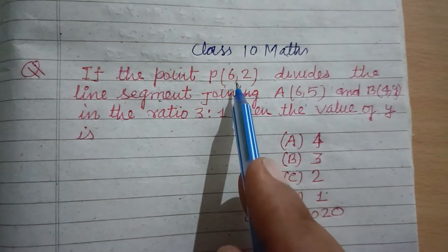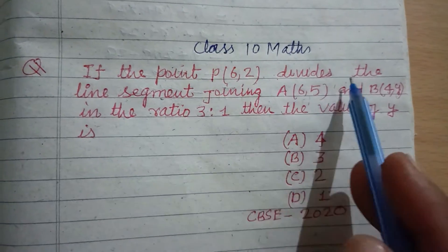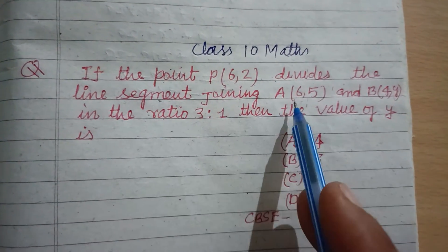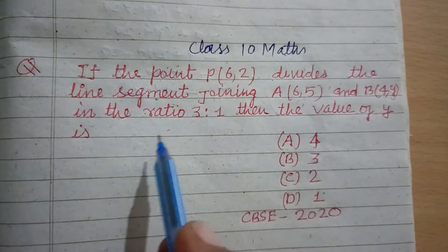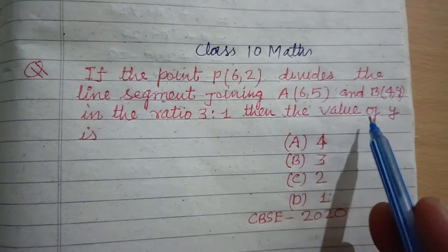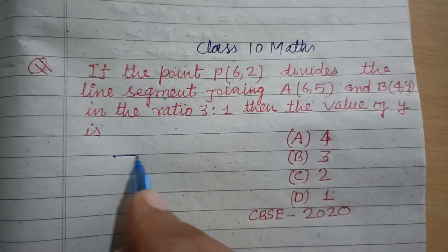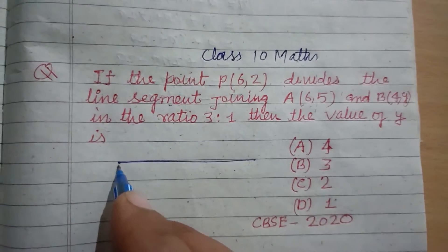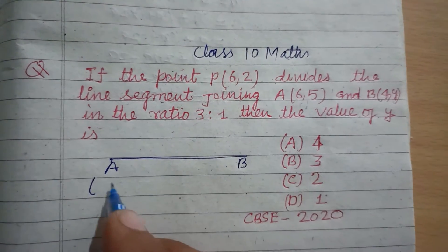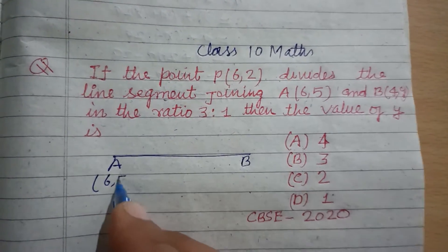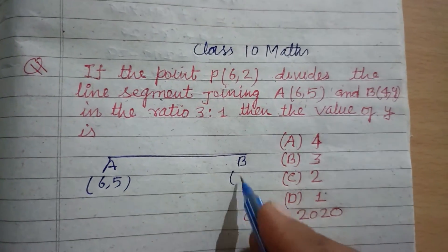If the point P divides the line segment joining A and B in the ratio 3:1, then the value of y is. So students, here are two points A and B with coordinates (6,5) and (4,y).